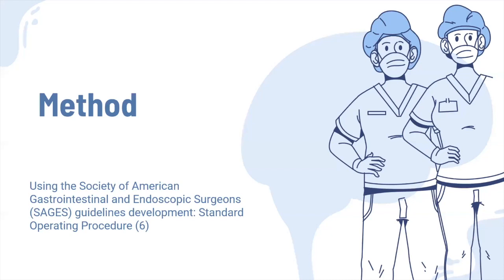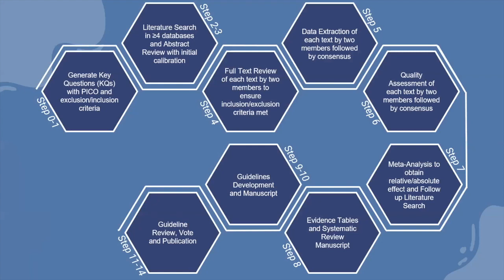The methodology outlined in the SAGES standard operating procedure begins with generating key questions using the PICO format — population, intervention, comparison, and outcome of interest — then defining inclusion/exclusion criteria, conducting a literature search using at least four databases, performing abstract review by calibrating all members, and then reviewing full texts to ensure they fit the key questions and inclusion/exclusion criteria.